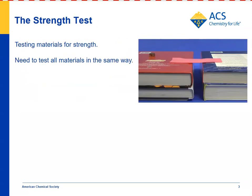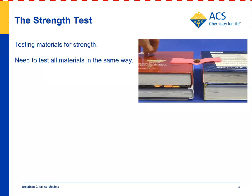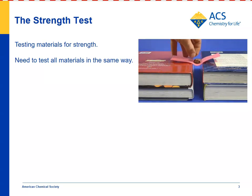Next, students do a strength test. You can demonstrate this by putting your piece of felt between two sets of books to give students an idea of how this will work. Then begin putting pennies right in the center and see how many pennies the felt can hold before it fails. Students will do this with their plastic, paper, and aluminum foil, and see if there's a difference between them. You'll encourage students to use paper, aluminum foil, and plastic of all the same dimensions, so that it's as fair a test as possible.